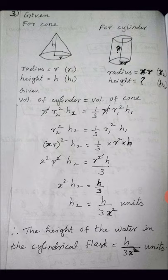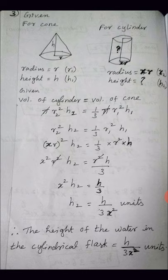We have to find the height of the water in the cylindrical flask. Now see the solution. For the cone, the radius is taken as r1 and height as h1.